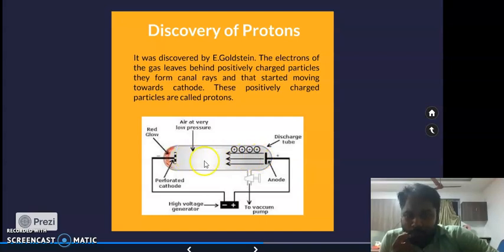As the rays are moving towards the negative side of the circuit, that gas should have some positive ions, and those positive ions are called protons. So Goldstein discovered the protons.